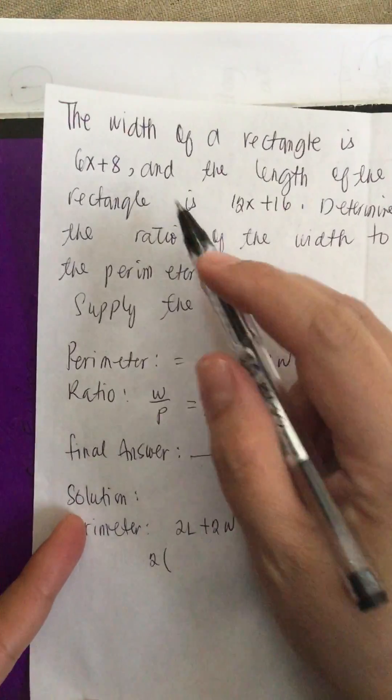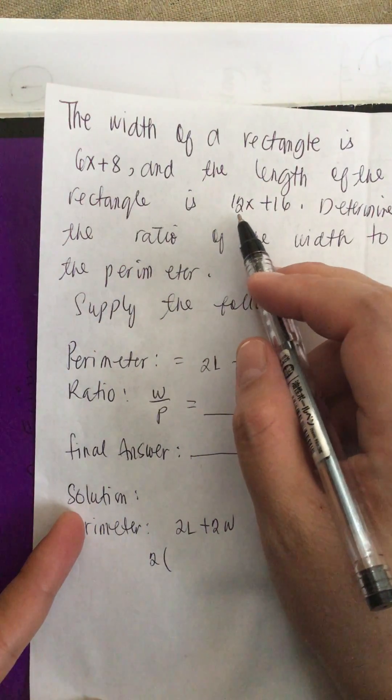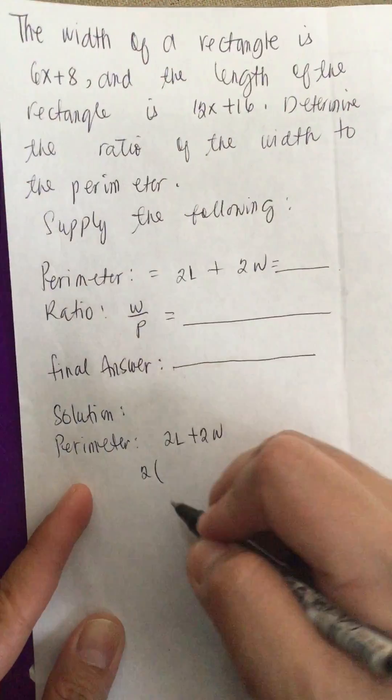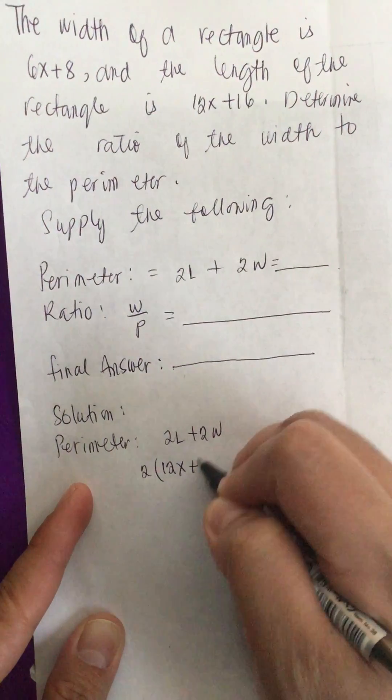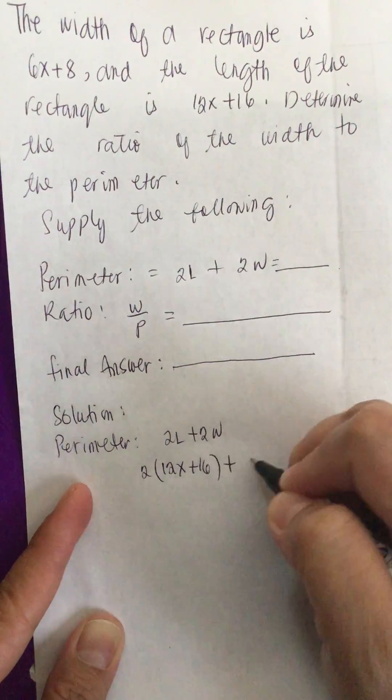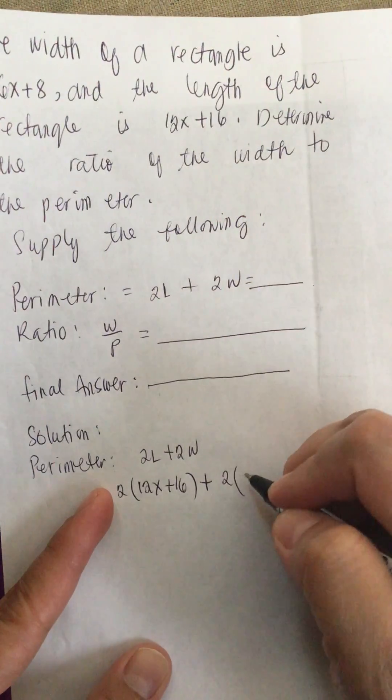2 times L, the length is 12x plus 16, plus 2W, which is 6x plus 8.